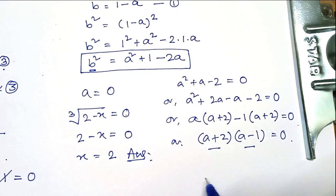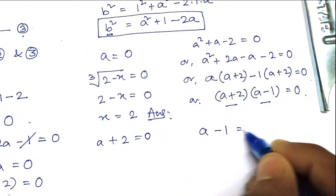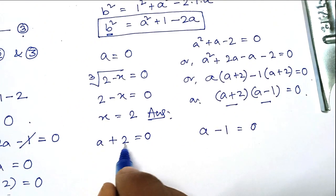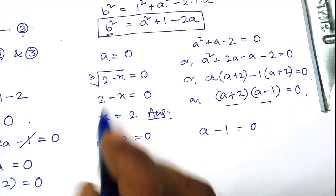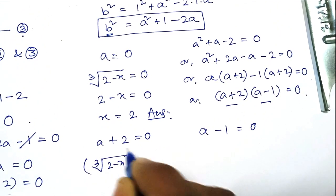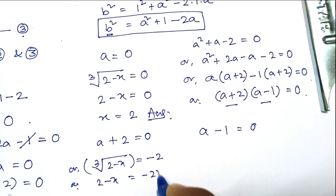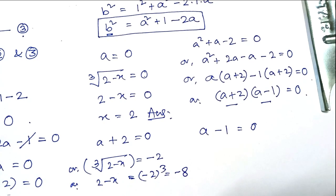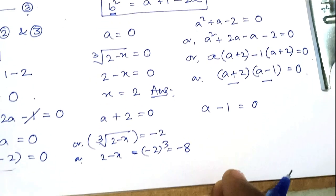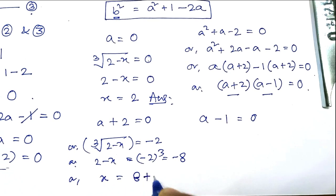Either of these factors equals 0. For the second solution, a plus 2 equals 0, so a equals minus 2. Since a equals cube root of (2 minus x), cubing both sides gives 2 minus x equals (minus 2) cubed, which is minus 8. So x equals 8 plus 2, that is x equals 10.